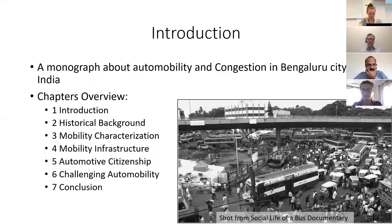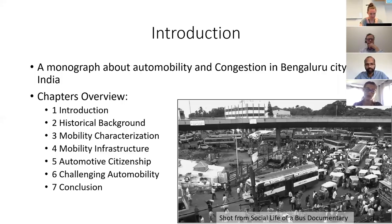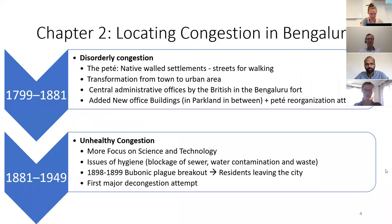Chapter four introduces the reader to the infrastructurescape and discusses how automotive citizenship gets shaped. Chapter six gives voice to contrasting concepts that constantly challenge the constellation of congestion, and thus offers guidance for alternative paths. Let's start with the historical overview of the layers of congestion in Bengaluru.